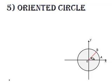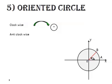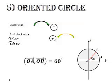Now, the oriented circle. Clockwise is the negative sense, and anticlockwise is the positive sense. So if arc AB equals 60, then arc BA equals minus 60.